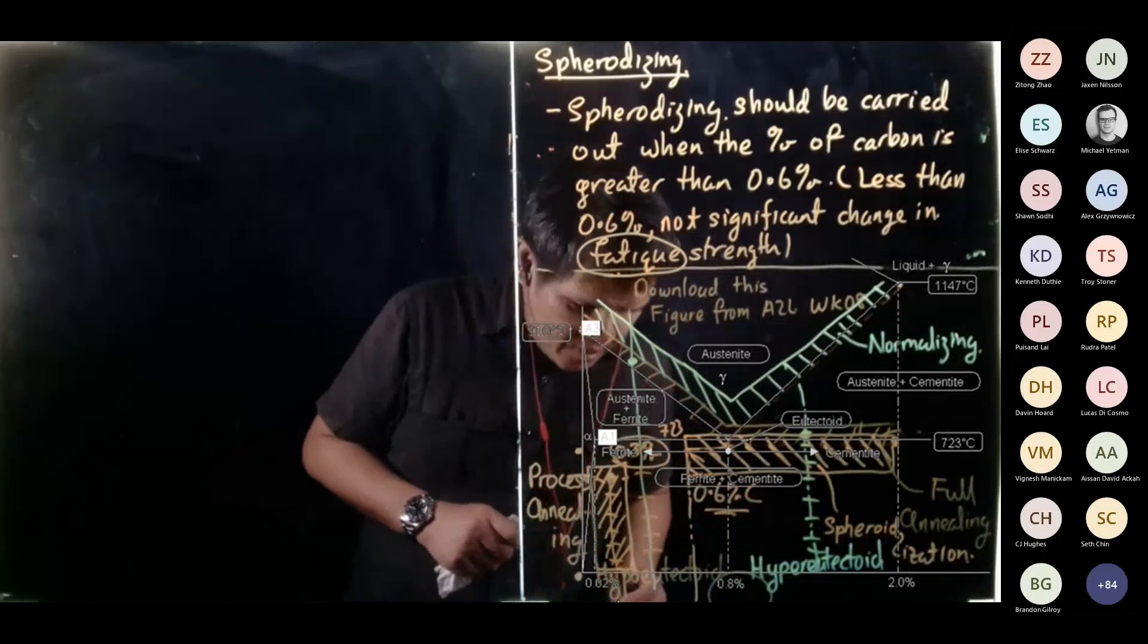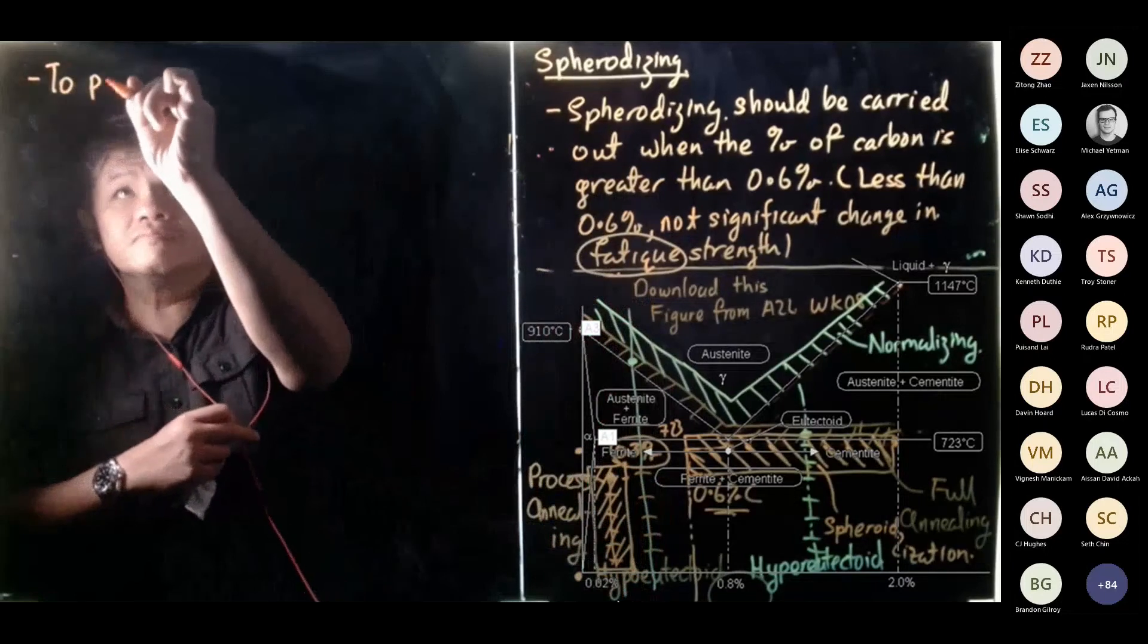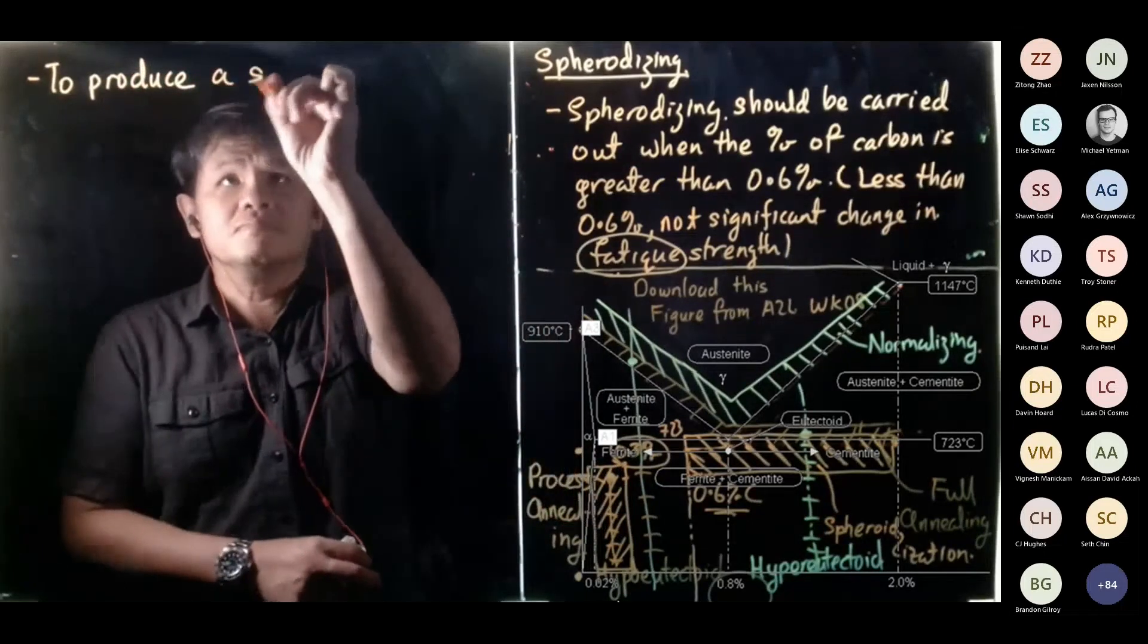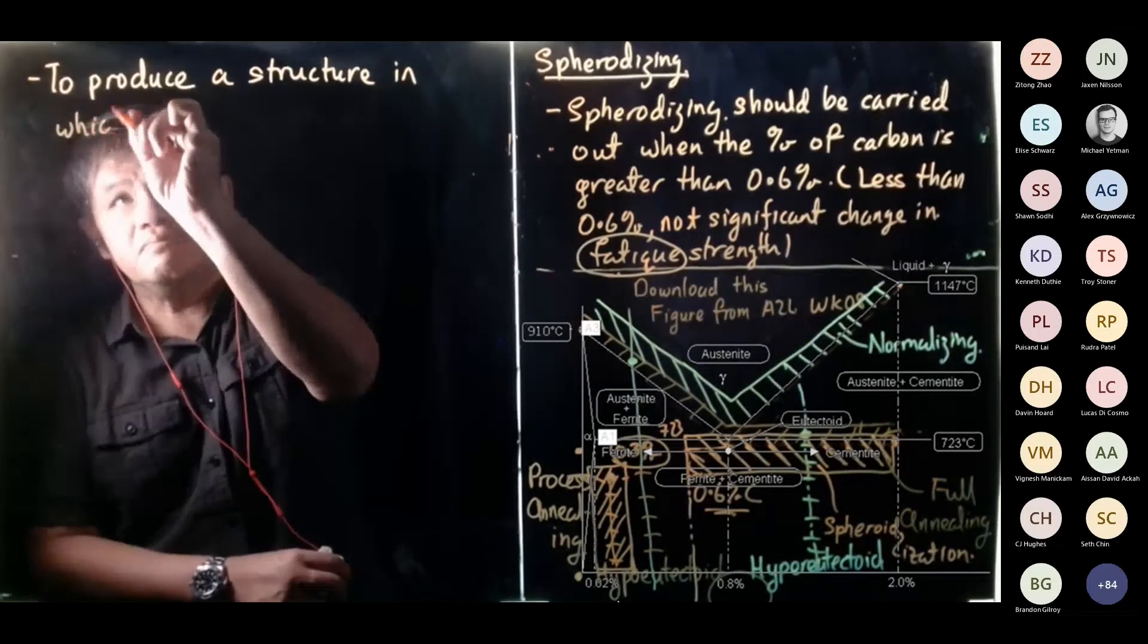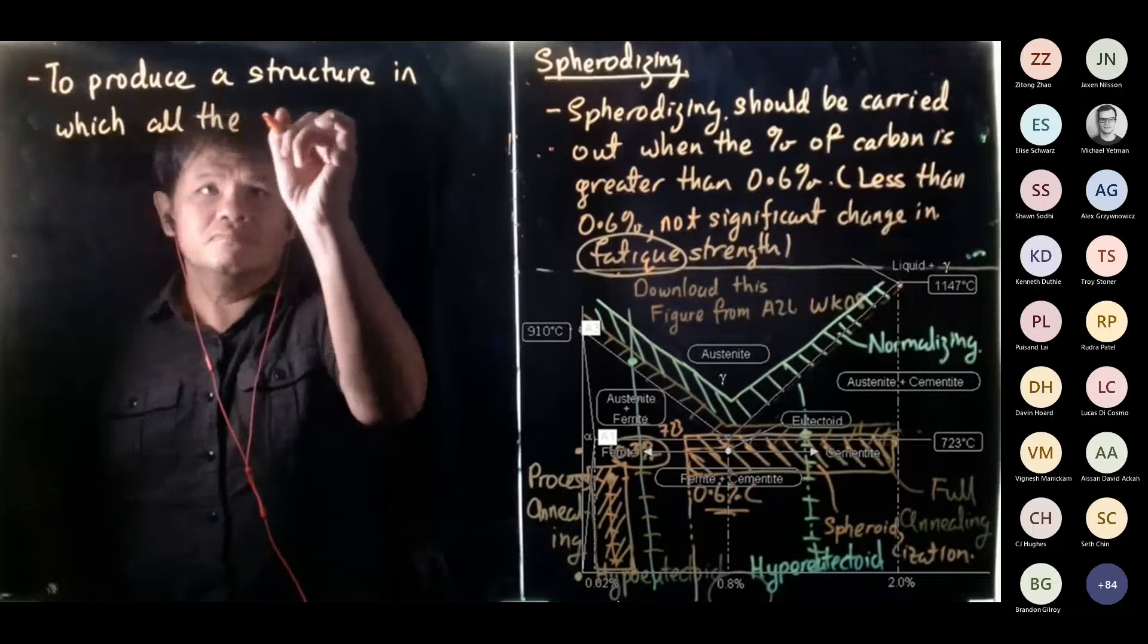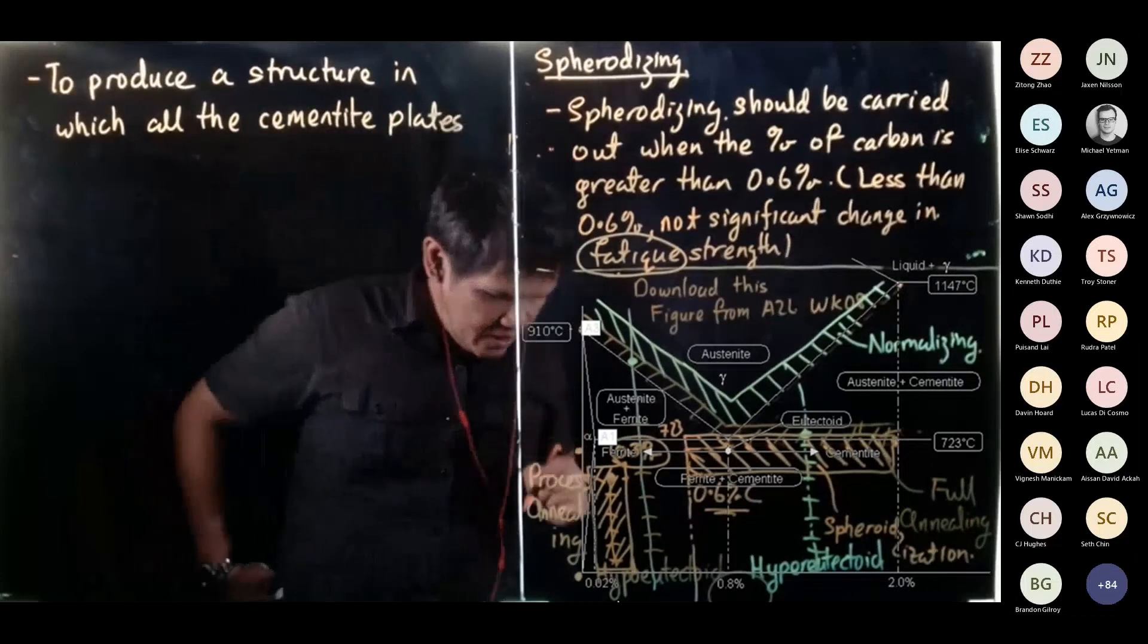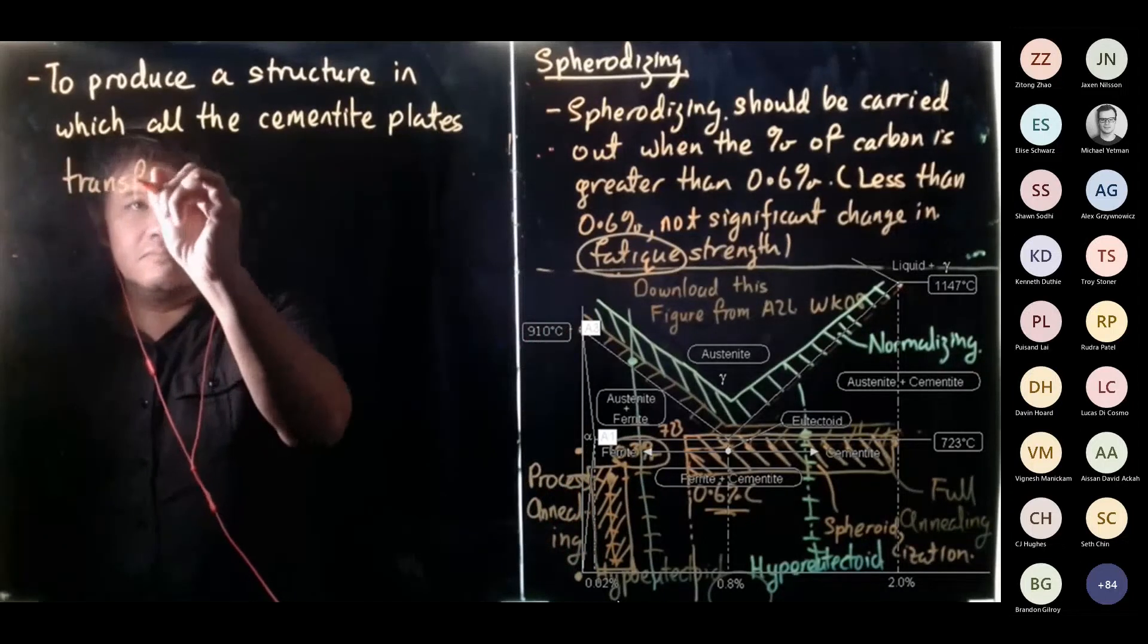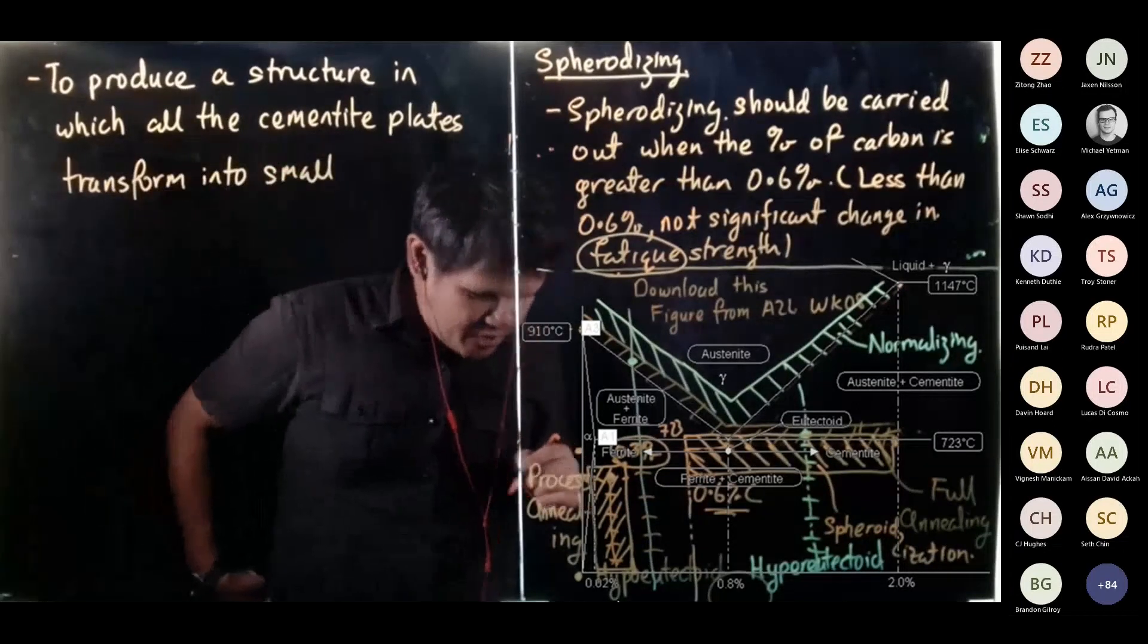We tend to produce a structure in which all the cementite plates, all the cementite plates transform into small spheroids.